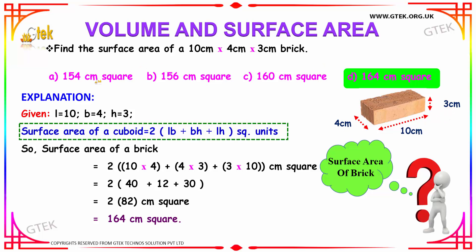Let us see the options. Option A is 154 cm², option B is 156 cm², option C is 160 cm² and option D is 164 cm².